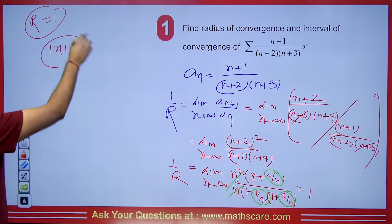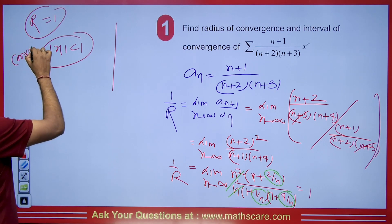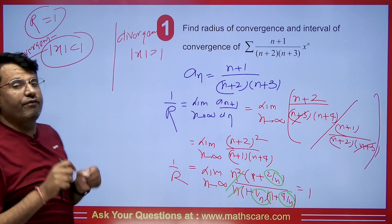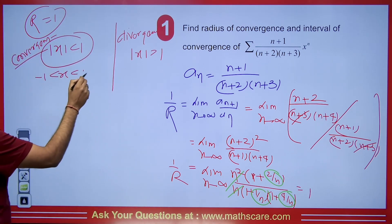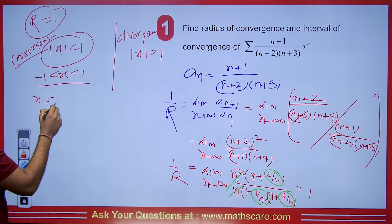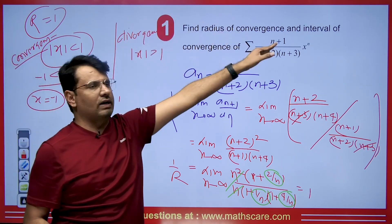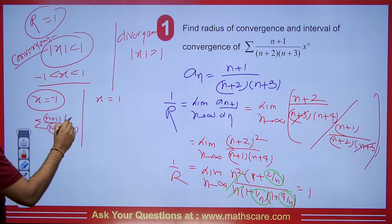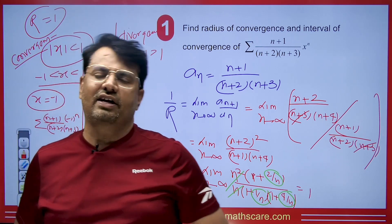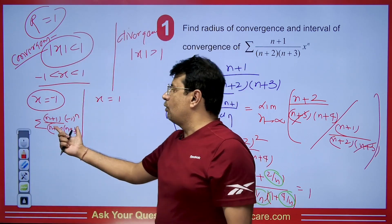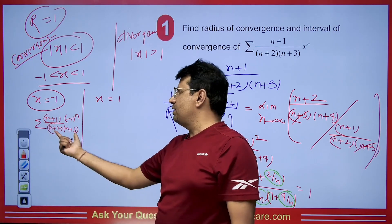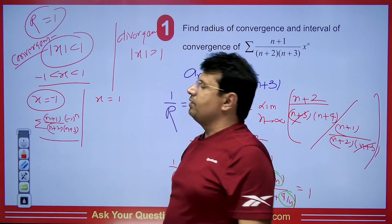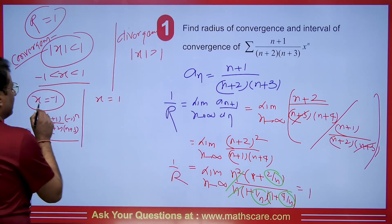Since R = 1, the series is convergent for |x| < 1 and divergent for |x| > 1. Expanding the interval gives x ∈ (−1, 1). We must check the endpoints. At x = −1, the series becomes Σ(n+1)/((n+2)(n+3))·(−1)ⁿ — an alternating series. By Leibniz's theorem, the terms are monotonically decreasing and the limit of the term as n→∞ is 0 (denominator power dominates). So at x = −1, the series is convergent.